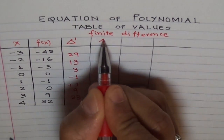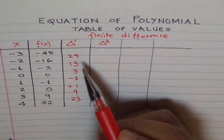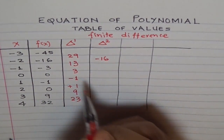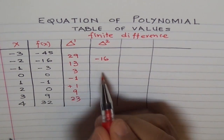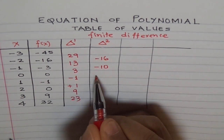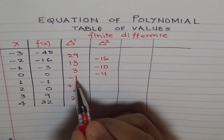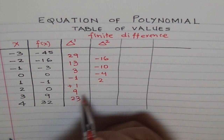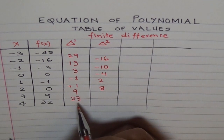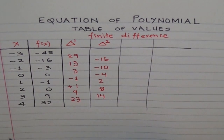Let's find the second finite difference. This time it will be 13 minus 29 and we get minus 16. 3 minus 13, we get minus 10. Minus 1 minus 3 gives us minus 4. 1 minus minus 1 will give us 2. 9 minus 1 gives 8, and 23 minus 9 will be 14. This is also not constant.